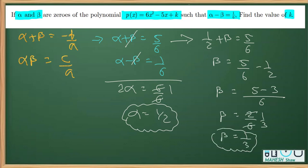Now once we have got alpha and beta, we can use this relation. Alpha into beta, where alpha is half and beta is 1 by 3, equals C by A. Now look into C.